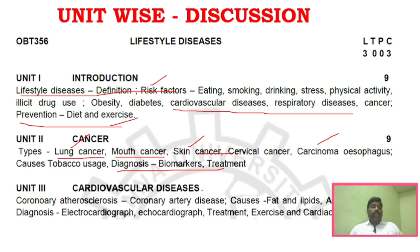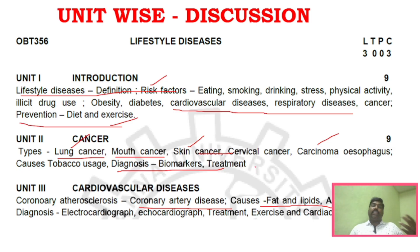Unit 3 covers coronary artery diseases and cardiovascular diseases. The causes include fat, lipids, and alcohol — how these create cardiovascular disease is important to understand. Also very important in this unit are electrocardiograph and echocardiograph.